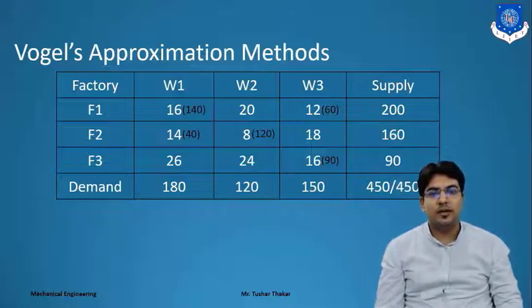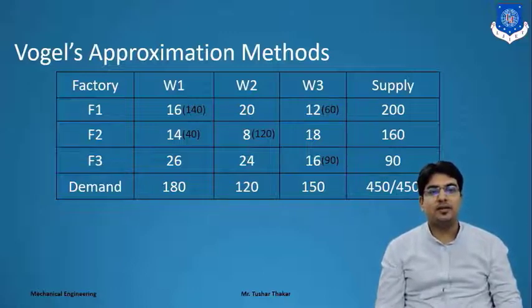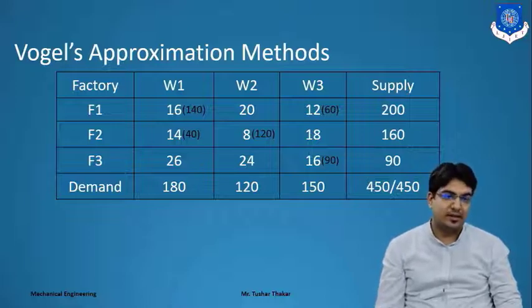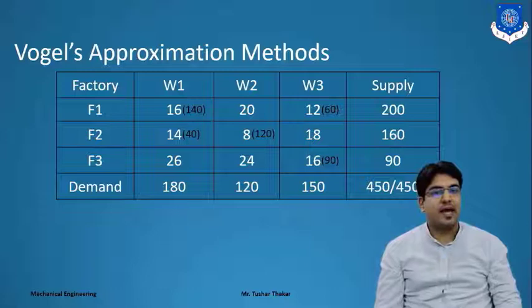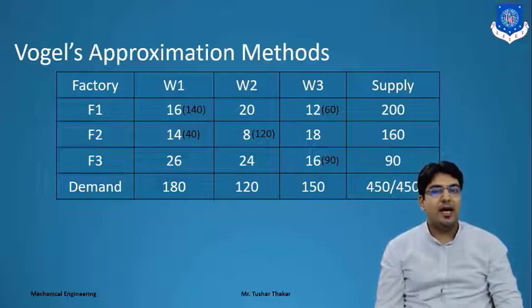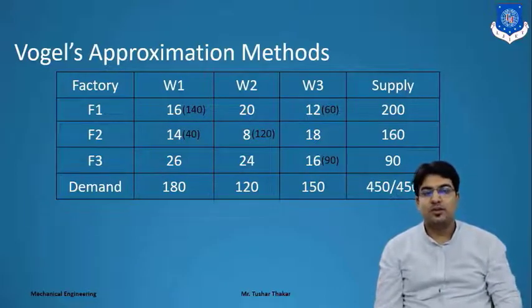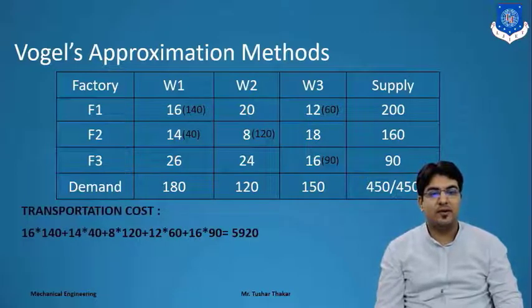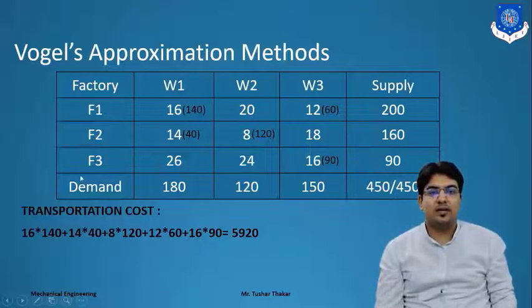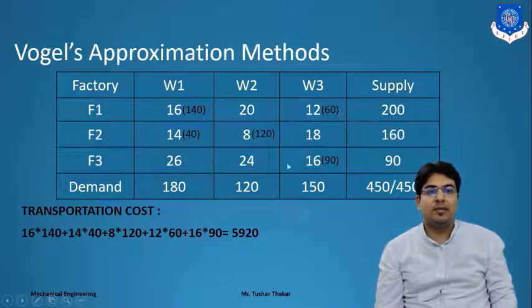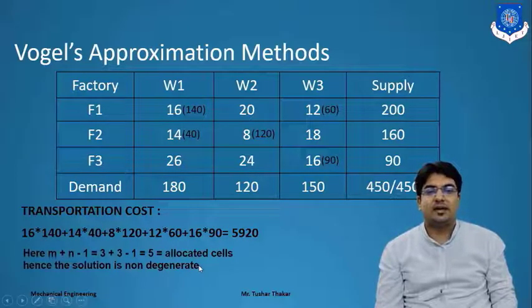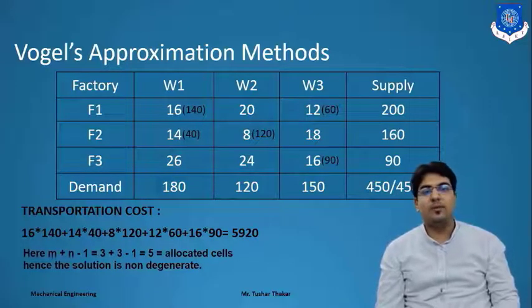Before using the Modi method, we first have to check whether the given solution is degenerate or non-degenerate. For that we use the equation M plus N minus 1 equals the number of allocations, where M is the number of columns and N is the number of rows. The transportation cost is 5920. Here there are 3 columns and 3 rows, so 3 plus 3 minus 1 equals 5, and the number of allocations is also 5. So the given problem is a non-degenerate problem and we can apply the Modi method.